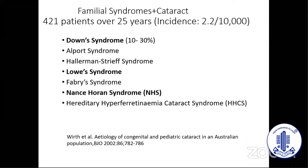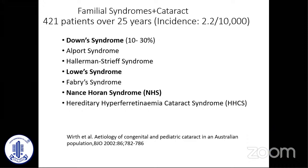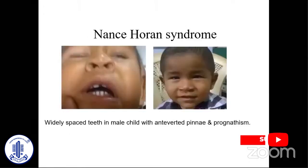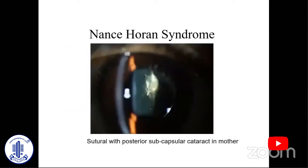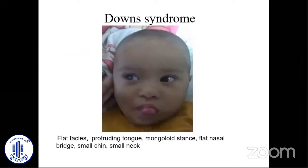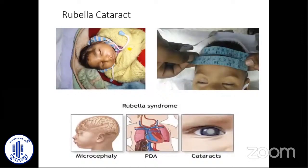There are certain associations. A paper from Australia found that about 2.2 in 10,000 will have a familial or syndromic cataract. Nance-Horan syndrome can be easily picked up if you dilate the parents — especially the mother's eyes — and see a distant direct. Downs is the commonest syndromic cataract seen. Rubella is again on the rise; we're getting many patients presenting with rubella — typically a microphthalmic, non-dilating pupil with a partially absorbed cataract. Get a cardiology evaluation and you can pick up a PDA.